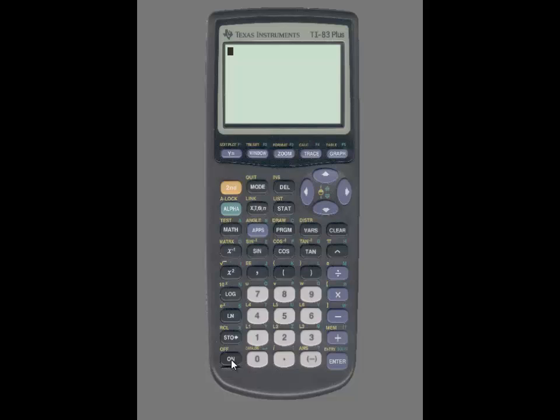You're first going to press STAT, use the right arrow key to highlight TESTS, and select number two for T-Test. On this screen you have two options: you can enter the data or you can enter the summary statistics.